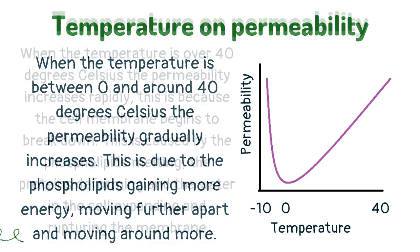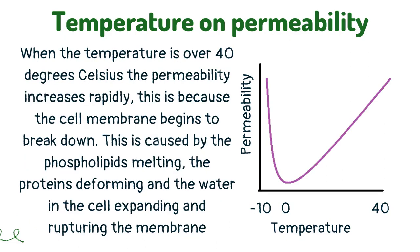When the temperature is over 40 degrees Celsius, the permeability increases rapidly. This is because the cell membrane begins to break down, caused by the phospholipids melting, the proteins deforming, and the water in the cell expanding and rupturing the membrane.